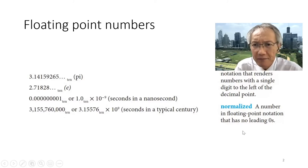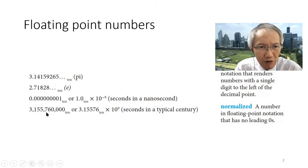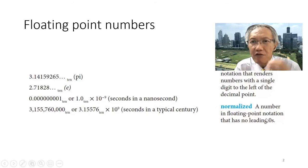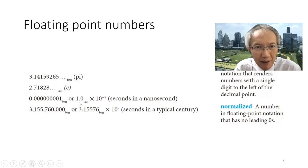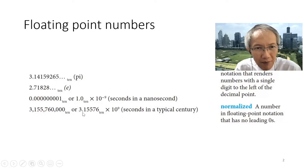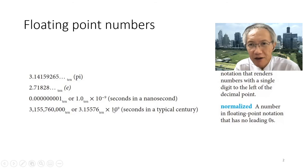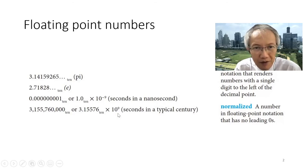Another term is 'normalized.' Normalized means we have very different ways to show the same number, and we want to show it such that there is no leading zero. For tradition, we shift everything to the left and then change the exponent at the end. So 0.01 becomes 1.0 with a changed exponent. We move everything to one-point-decimal with no leading zero, and change the exponent in the scientific notation. We call these the normalized number.